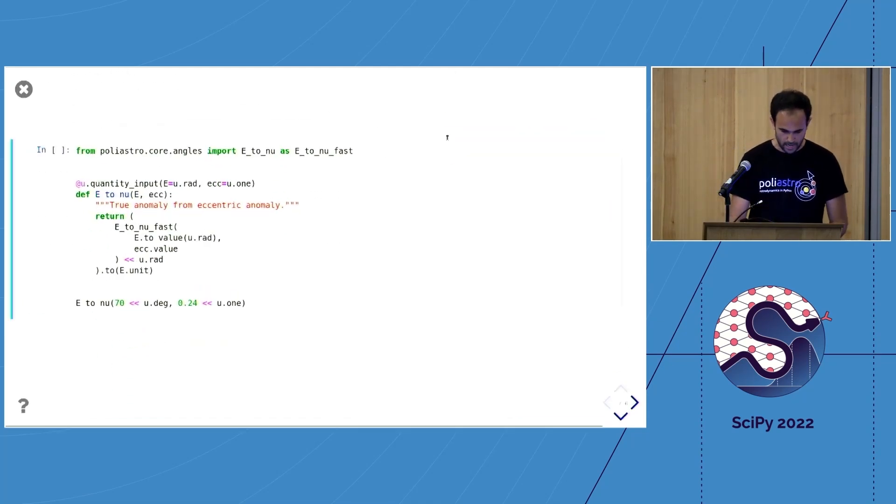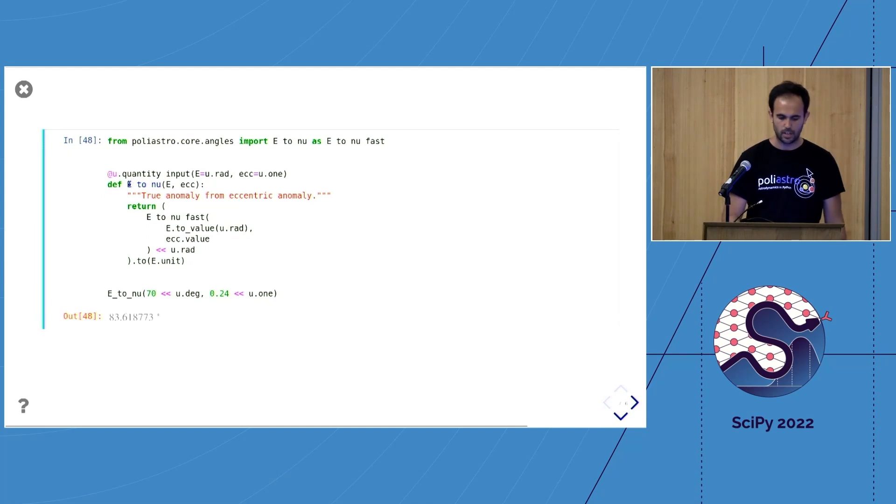This is how it looks like in practice. For example, we have this function to convert the eccentric anomaly to the true anomaly. We have the fast version of it. Basically, this is checking that the units are correct, but then it's stripping the units before input, then assigning a unit on output and converting to the same unit as we had initially. It's a way to wrap this fast function effectively.